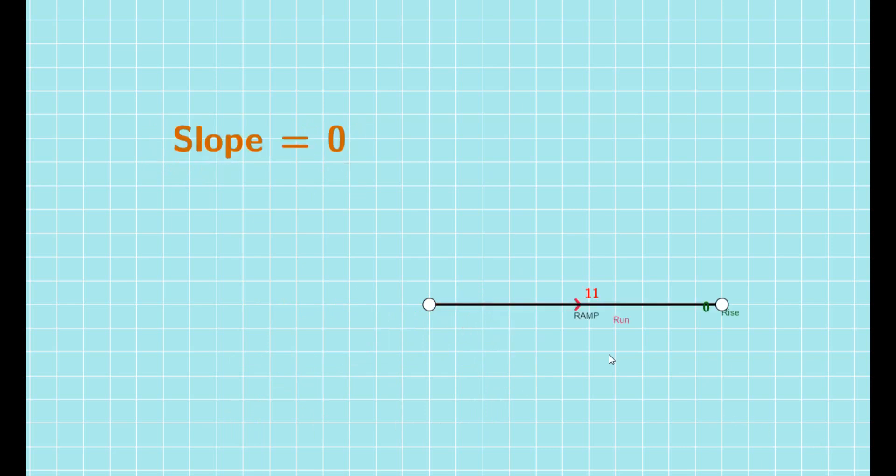Since run is negative now and rise is positive, the ratio we call slope is negative. Same way, here rise and run both are negative, so the slope is positive, while here the slope becomes negative again.